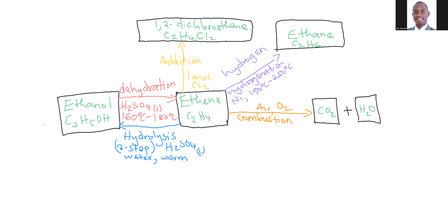Ethane can also undergo combustion and lead to the same products. So it means that these two are interconnected. Adding air or oxygen gives us carbon dioxide and water from ethane as well.